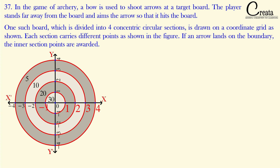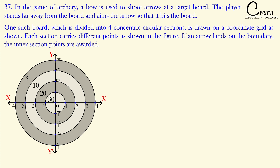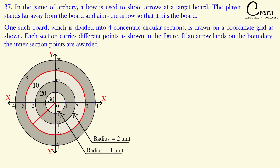In the negative x-direction, the boundaries are at -1, -2, -3, -4. Similarly, in the y-direction, both plus y and minus y. We can say the radius of the innermost circle is 1 unit, the next circle has radius 2 units, the next has radius 3 units, and the outermost circle has radius 4 units.